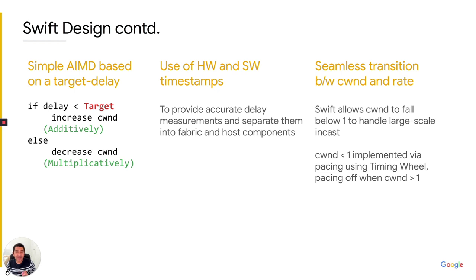Swift seamlessly transitions between congestion window and rate. We pace packets when the congestion window falls below one using a timing wheel, but we do not pace packets when the window is above one. From our experience, always-on pacing is largely unnecessary for effective performance at scale, and this aspect of Swift aids CPU efficiency.